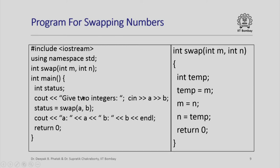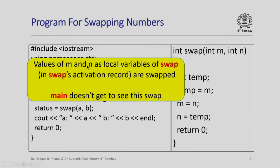Since we are using call by value, when swap is called the values of a and b in main are copied to the activation record of swap — m and n are local variables of swap. When swap manipulates m and n it is manipulating its local variables, and when swap returns all those changes are lost. So main does not get to see the swap that this function tried to do. The activation record for swap, in which its local variables were swapped, is lost when swap returns to main.